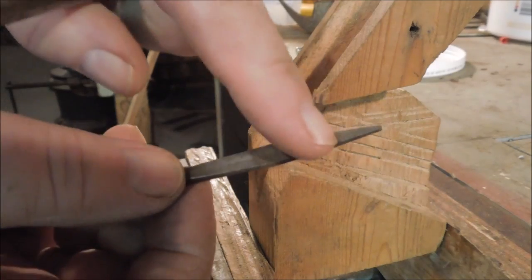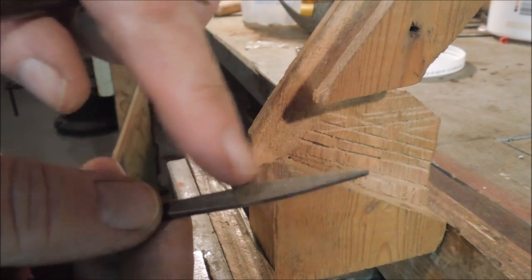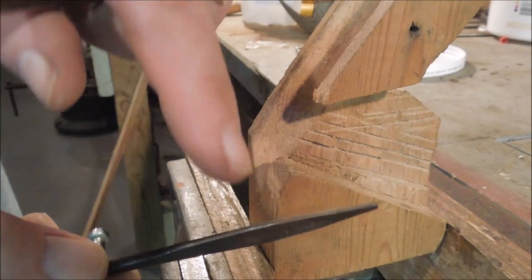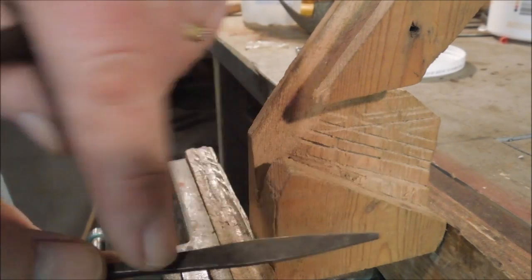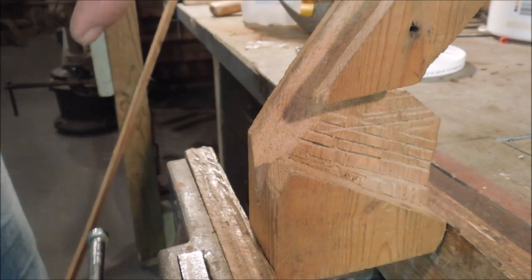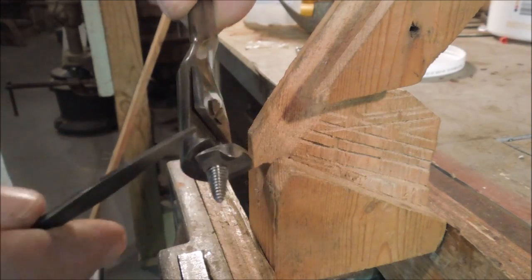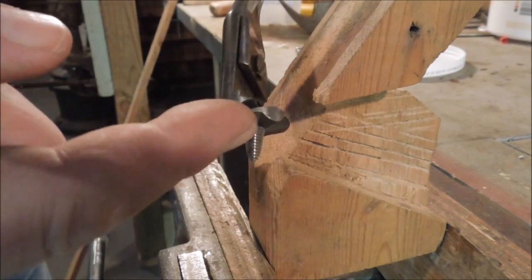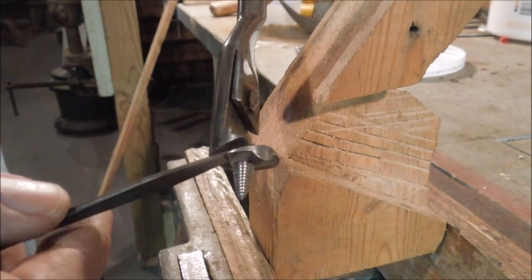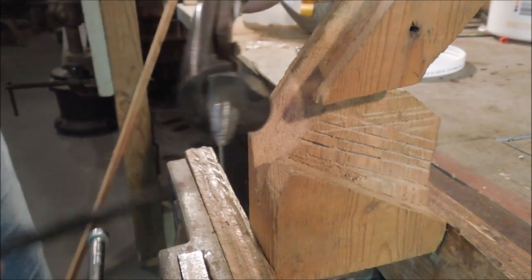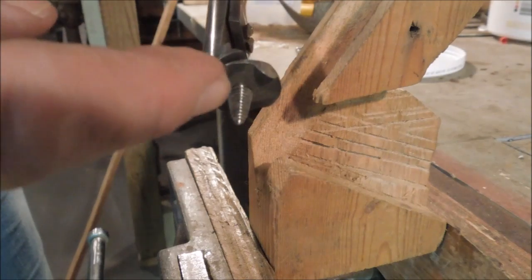This auger bit has teeth on the flat on this end and safe edges. On this end it has teeth on the edges and it's a flat. So to sharpen this auger bit I need to file this area right here. I'm going to take the part with the teeth on the flat and go in there and sharpen this edge right here.